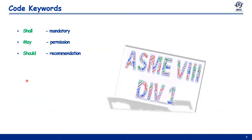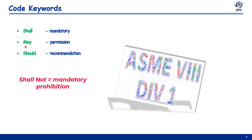Section 8 Division 1 uses certain guide words with specific meanings. 'Shall' denotes mandatory requirements. 'Shall not' denotes mandatory prohibitions. 'May' indicates a permission or recommendation that is not mandatory. 'Should' is simply a recommendation.